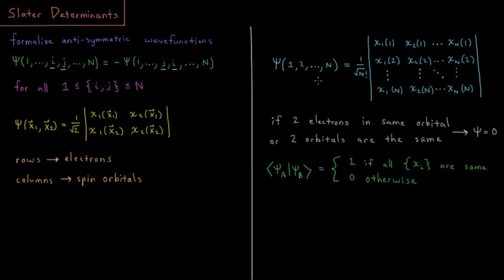A nice feature about this is that it automatically enforces the Pauli exclusion principle that we know from general chemistry, that you can't have two electrons with the same spin in the same orbital.